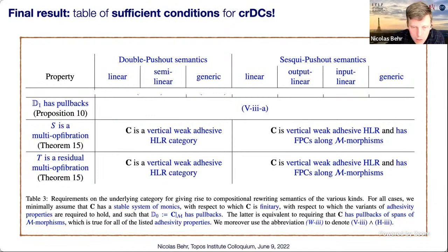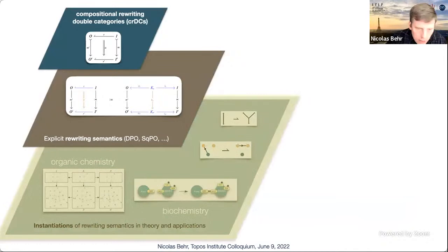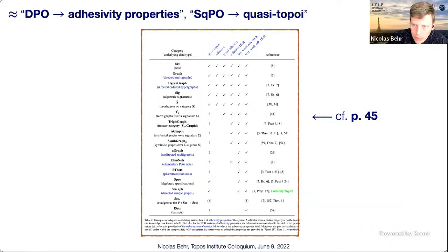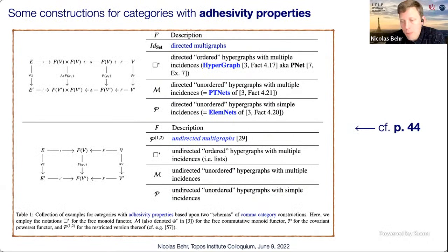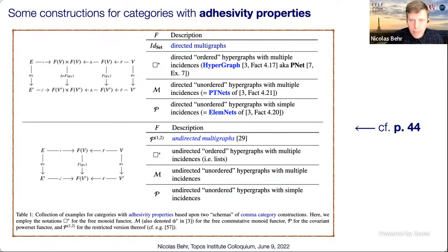I won't say much about the lowest level of the hierarchy — individual rewriting semantics — except to say that in the paper we have a large catalog of categories that are either known to be adhesive or quasi-topoi. The rough idea is that for DPO you need adhesivity properties and for SqPO you tend to need quasi-topos properties. One part of applied category theory here is a catalog of constructions for building useful categories — such as undirected multigraphs — from simpler categories with known properties.